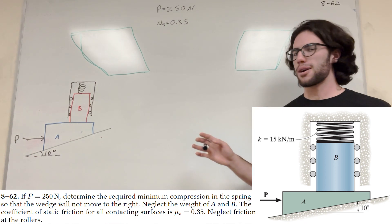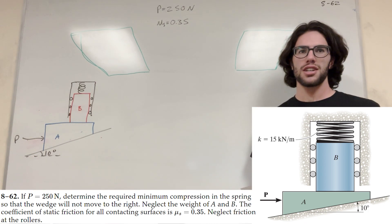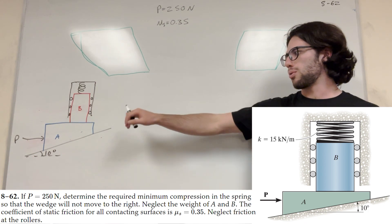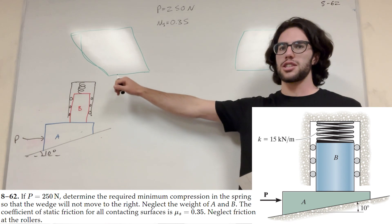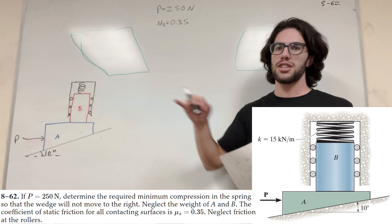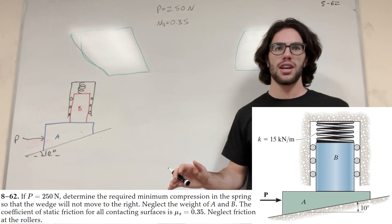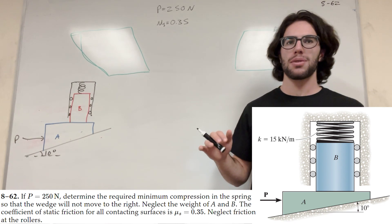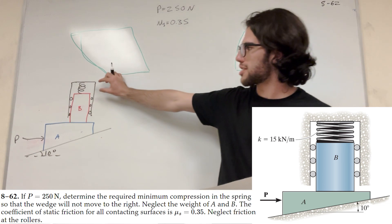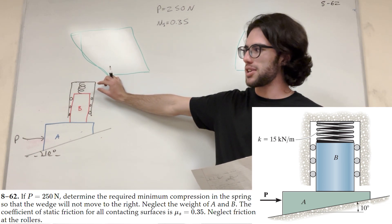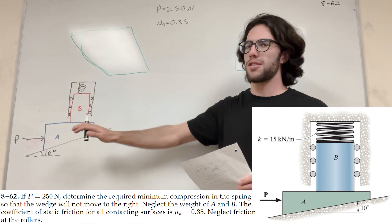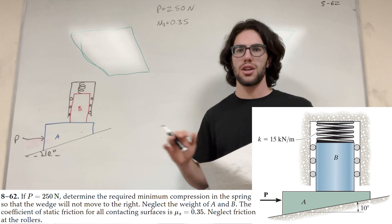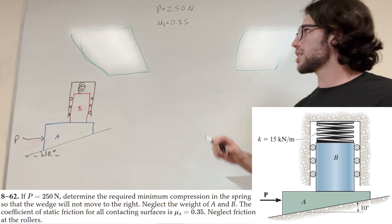What's up, Cal gang? All right, so we're back with a statics question. So we've got this problem — we have a wedge and a spring and then these two blocks, and we're trying to find the minimum compression of this spring, so how far do we have to compress this spring in order for this system to stop moving. So let's go ahead and get started.